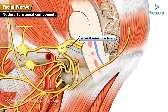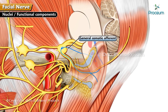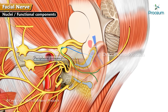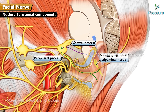General somatic afferent, which carries cutaneous sensations from the skin of the external ear. The cell bodies are located in the geniculate ganglion. The peripheral process innervates the receptors of the skin, whereas the central process relays in the spinal nucleus of the trigeminal nerve.